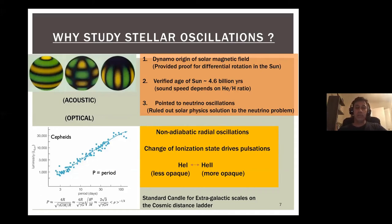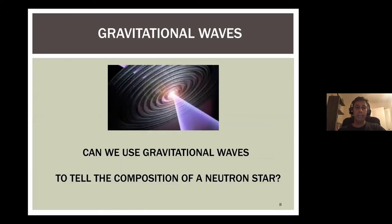We've learned a lot by studying stellar oscillations of regular main-sequence or evolved stars, not just compact stars. For white dwarfs there have been some confirmations of oscillation modes, but in neutron stars nothing has been detected yet — that's what we're looking for.